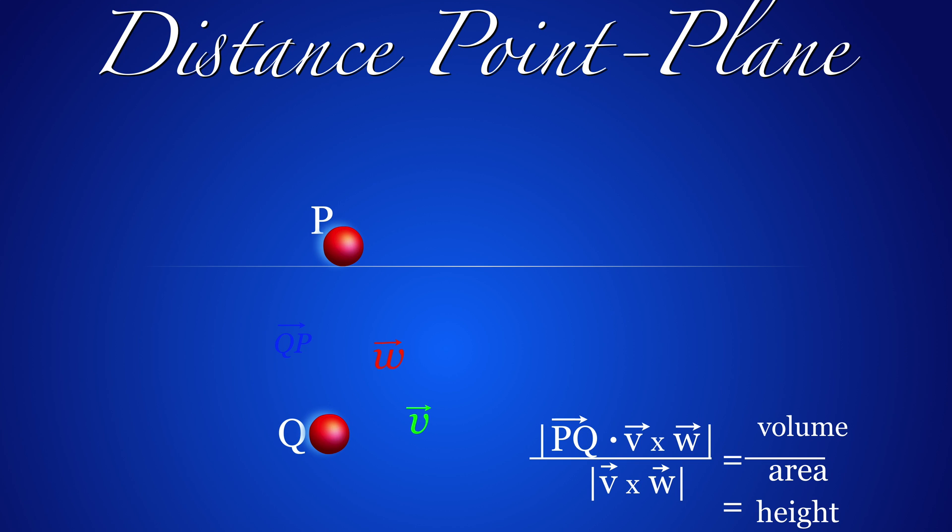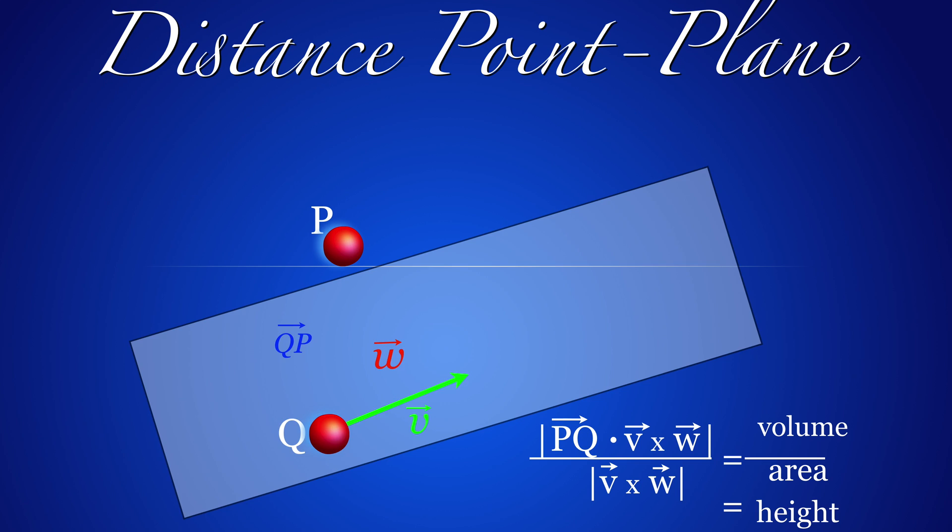Also here, the formula makes sense geometrically. It's the volume of the parallelepiped spanned by the vectors PQ, V and W divided by the area of the parallelogram. You can see this also as the absolute value of the scalar projection of PQ onto the normal vector V cross W.